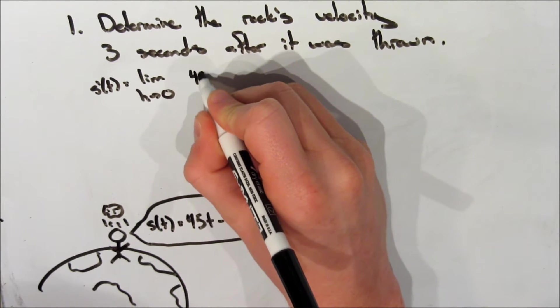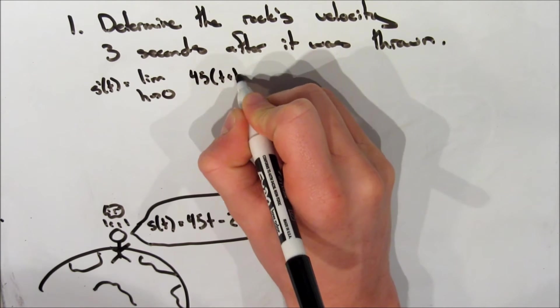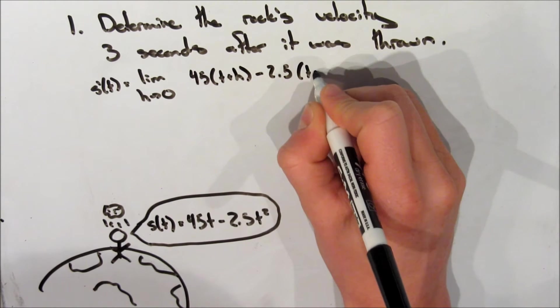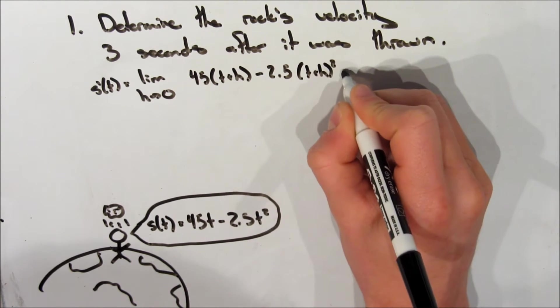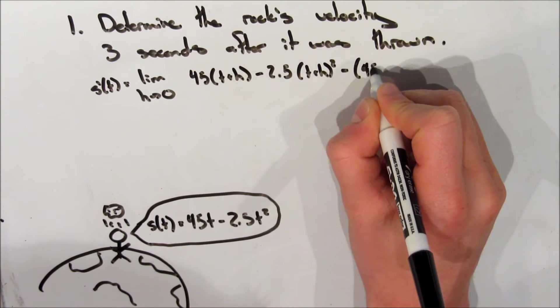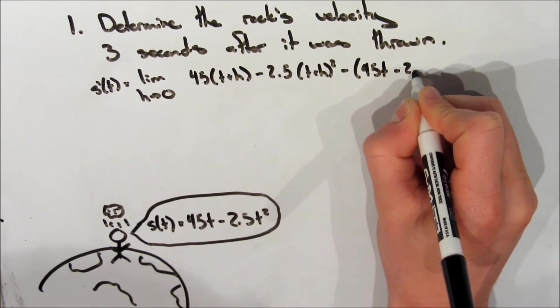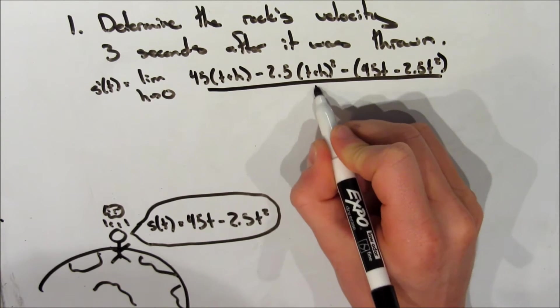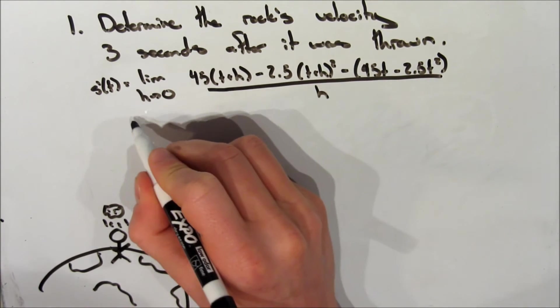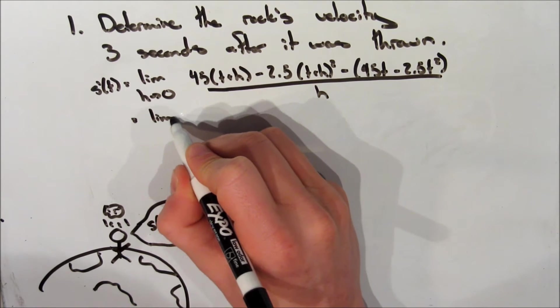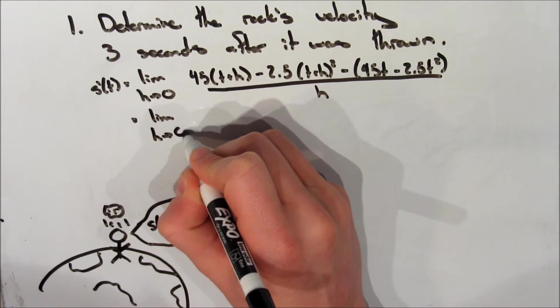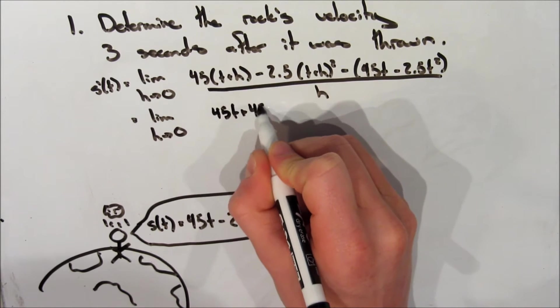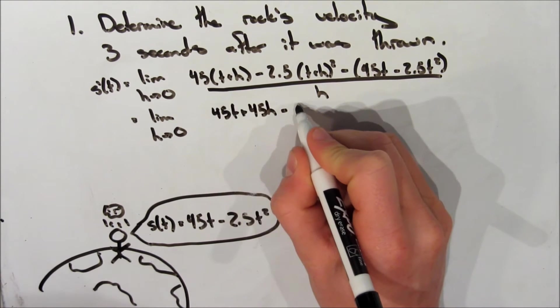To find velocity, we want to take the derivative of this function. So we're going to say s prime of t is equal to the limit as h approaches zero, so you should remember this formula. And so now we're doing f of t plus h minus f of t, then all that is going to be over h. So when we go to the next line, it's going to be the limit as h approaches zero, and we're going to expand these terms, see if we can expand and cancel some of them out, hopefully.